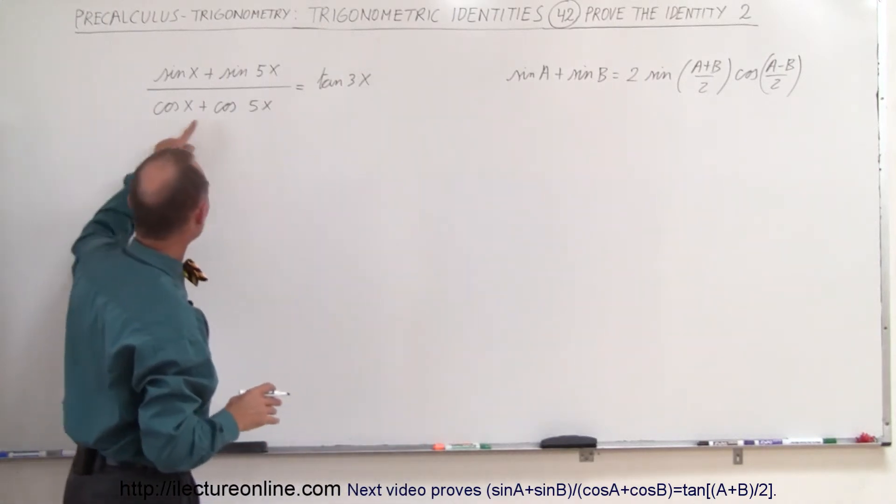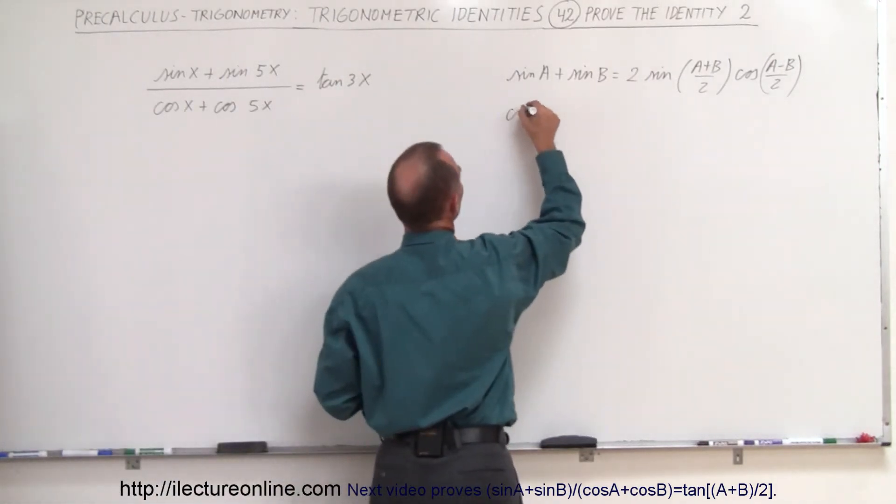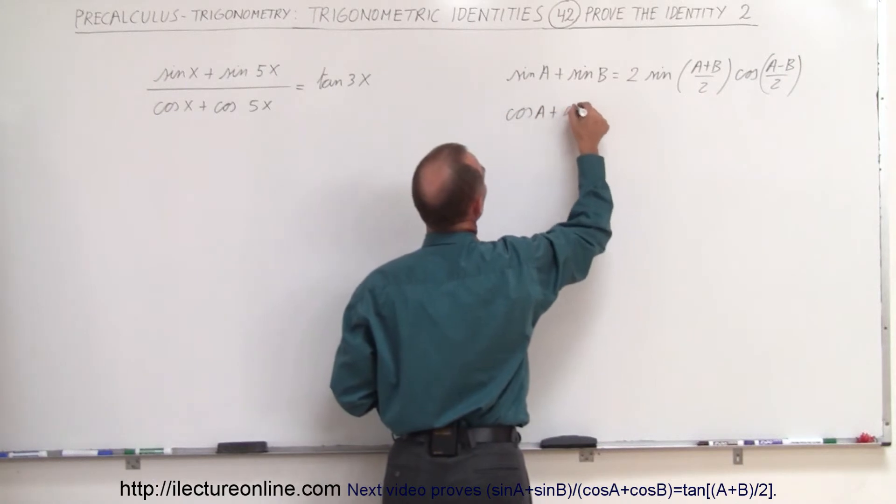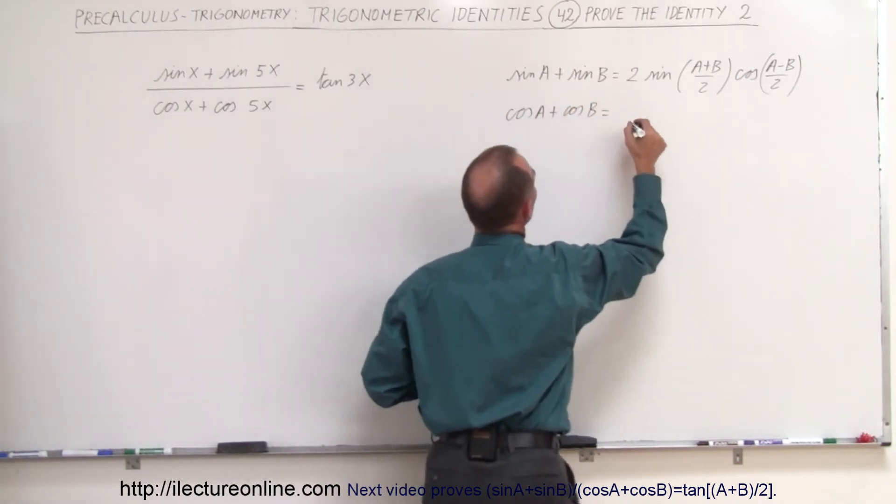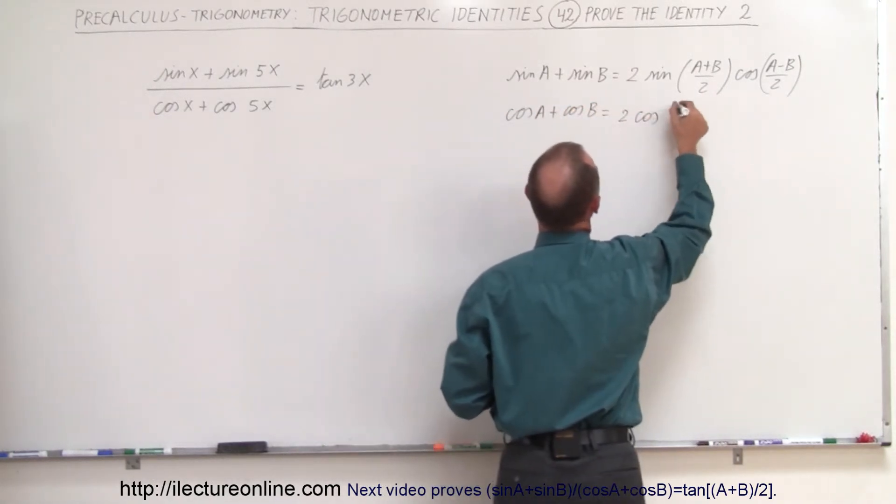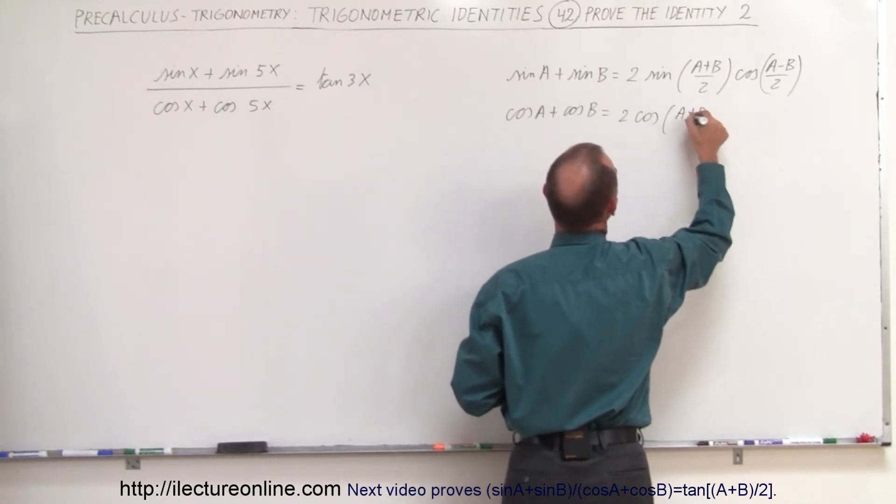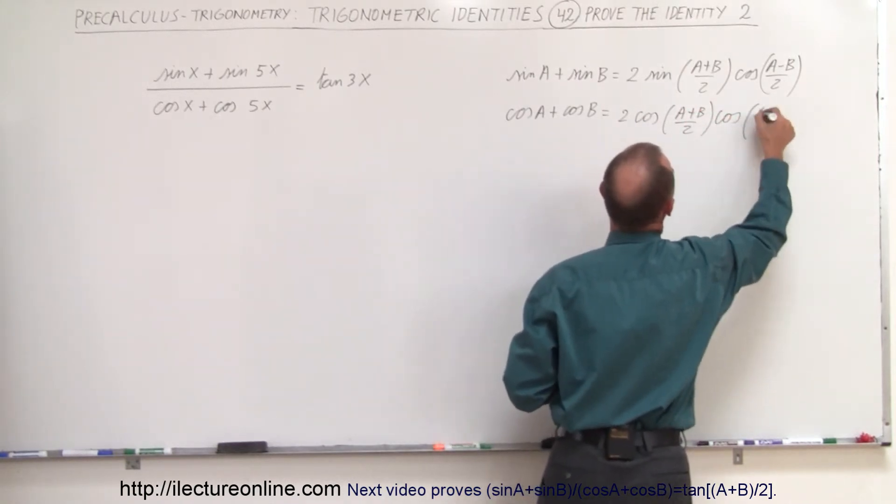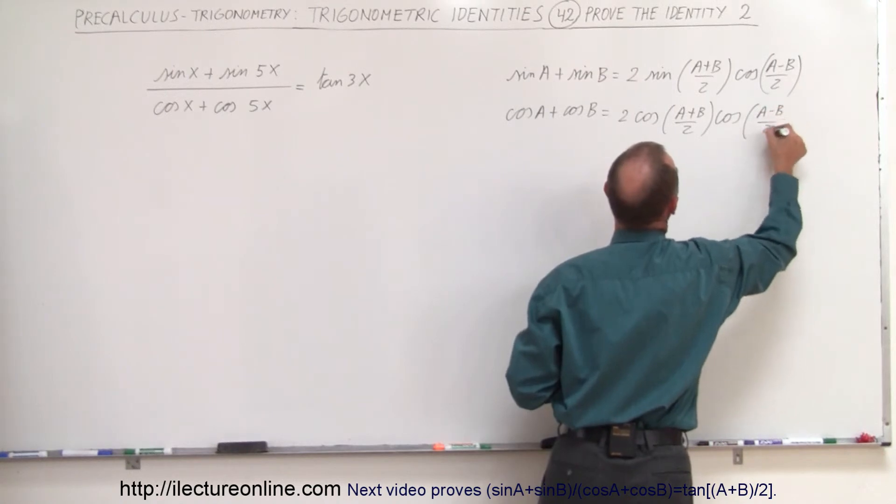Now the other one, the cosine plus the cosine. So we have the cosine of A plus the cosine of B that can be written as 2 times the cosine of A plus B over 2 times the cosine of A minus B over 2.